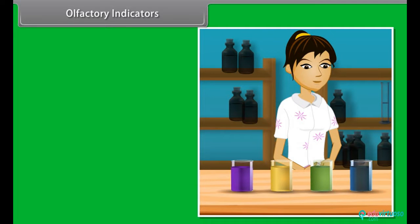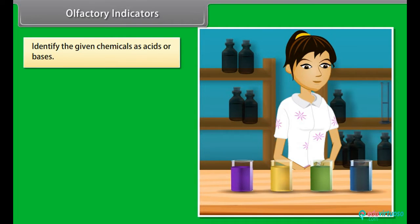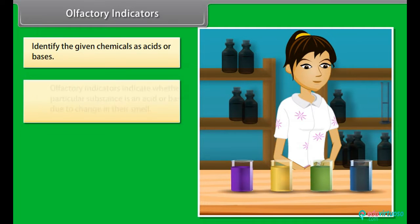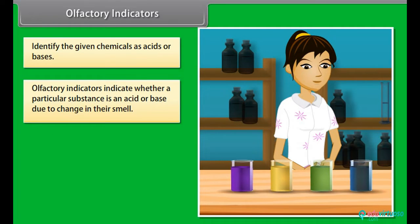Olfactory indicators. Suppose you are given four chemicals and asked to identify them as acids or bases. How will you do it? Let us find out. We have olfactory indicators, which indicate whether a particular substance is an acid or base due to change in their smell. They are used in the laboratory to test whether a solution is a base or an acid by a process called olfactory titration.